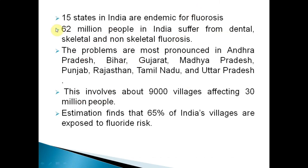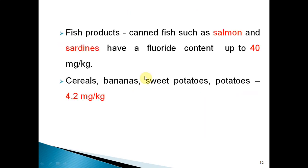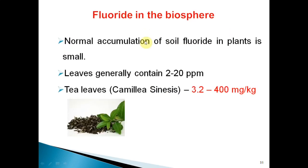15 states in India are affected by fluorosis, with some states having fluoride toxicity. Natural products high in fluoride include tea leaves at 3.2–400 ppm, and fish products like salmon and sardines, as well as cereals and bananas. In summary, the history of fluorides progressed from Dr. Frederick McKay to GV Black to Churchill, and finally to H. Trendley Dean, who conducted the 21-city study and shoe leather survey, ultimately finding that 1 ppm fluoride in drinking water could prevent dental caries.